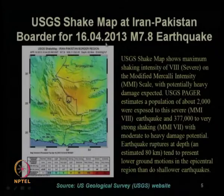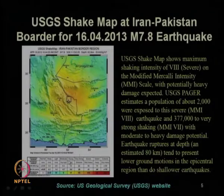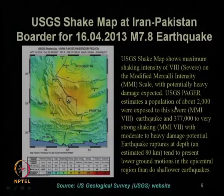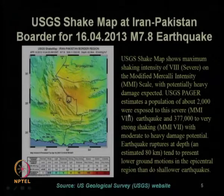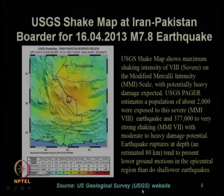This shows the USGS ShakeMap at the Iran-Pakistan border for the 16th April 2013 magnitude 7.8 earthquake. From this ShakeMap, the Modified Mercalli Intensity scale, or MMI scale, was about 8. About 2,000 people were exposed to this severe intensity of 8, and about 377,000 people were subjected to an MMI scale of about 7, as detailed on the USGS website.